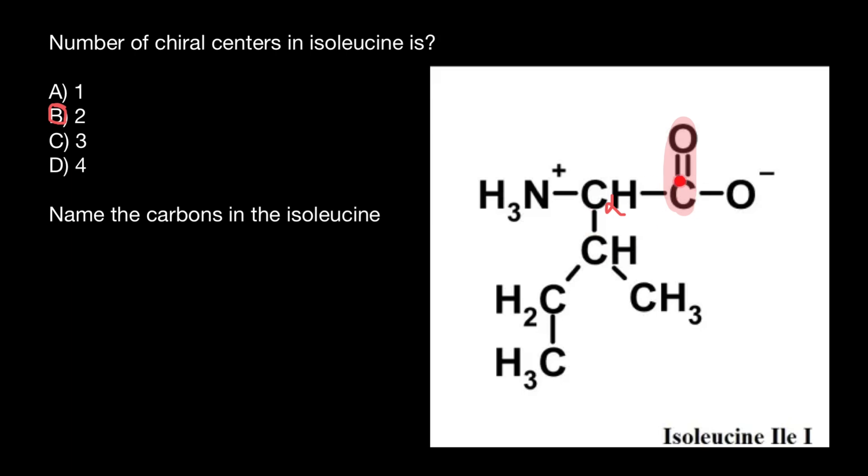Second carbon from this carbonyl carbon would be this carbon, and we are using Greek letters to specify a name of the carbon. So this is going to be beta carbon. So alpha is the first letter and beta is the second letter.